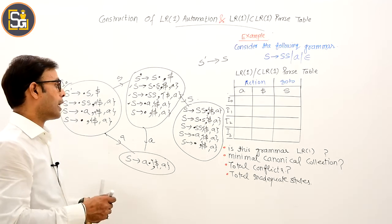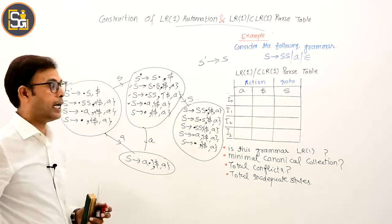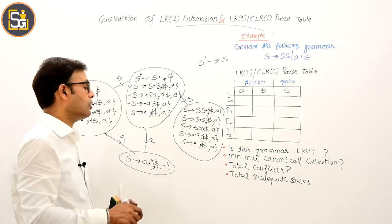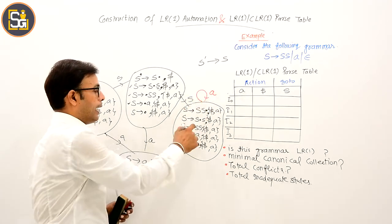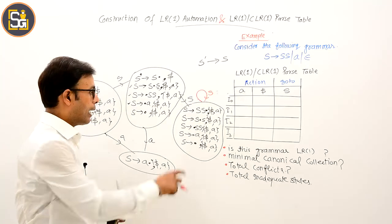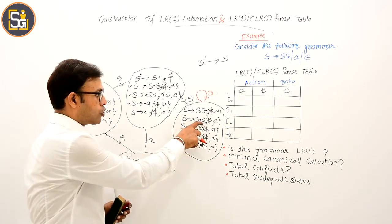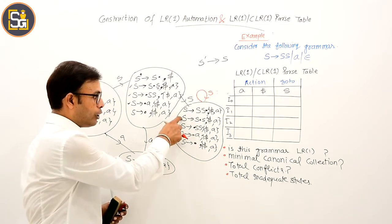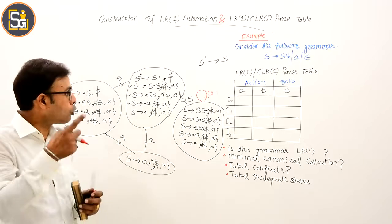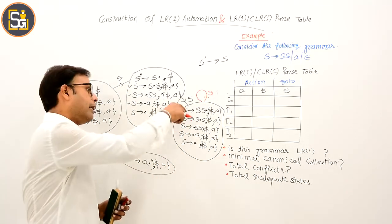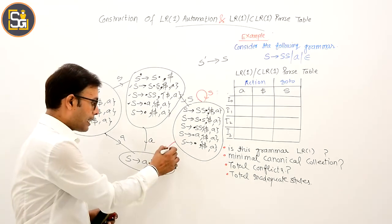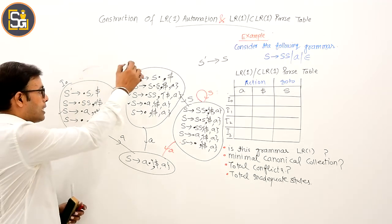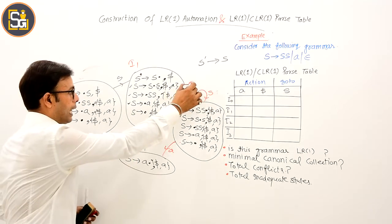अब यहाँ से S का transition करें तो S derives S dot, dollar/a और S derives S dot S, dollar/a — ये दोनों items beginning में मिलते हैं यानी इस list के लिए कोई अलग state नहीं बनाएंगे, loop लगा देंगे. और एक reduced item भी है. कुल मिलाकर total four states हैं: I0, I1, I2, और I3.